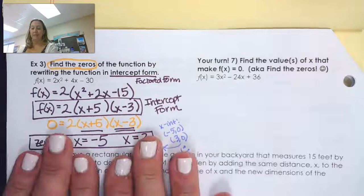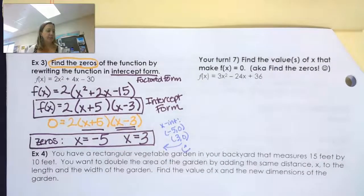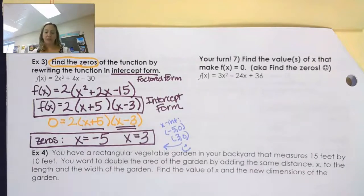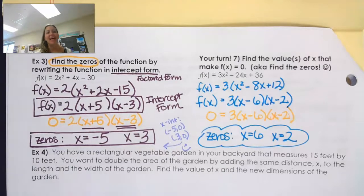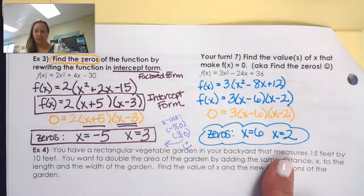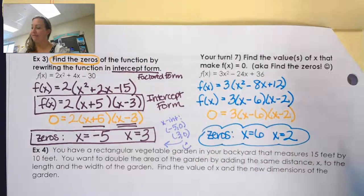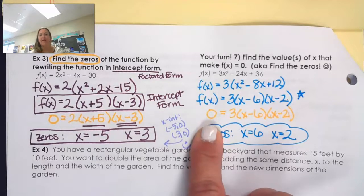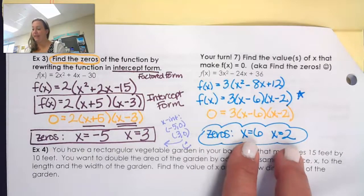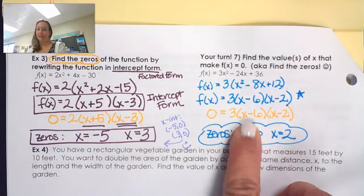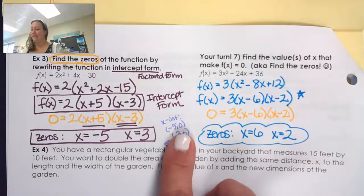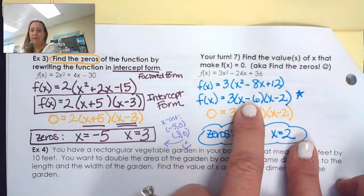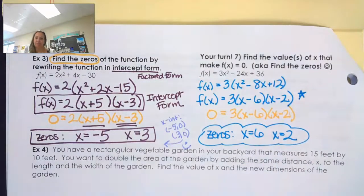Zeros are values of x that make the function equal to zero. Try your turn number 7 — pause the video. The zeros are x = 6 and x = 2. Starting by finding the GCF and writing in intercept form, then setting f(x) = 0 finds the values that make the function equal to zero. The x-intercepts would be at (6, 0) and (2, 0), corresponding to those zeros.